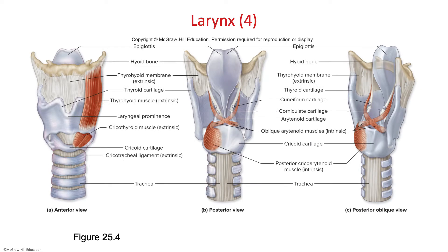Here is an anterior view of the larynx. You can see the thyroid cartilage is the largest of the cartilages. The epiglottis is the tongue-shaped structure that closes over the larynx to prevent food from going down your trachea when you swallow. The cricoid cartilage is right below the thyroid cartilage, and the arytenoid cartilage is positioned in between the thyroid and cricoid cartilages.